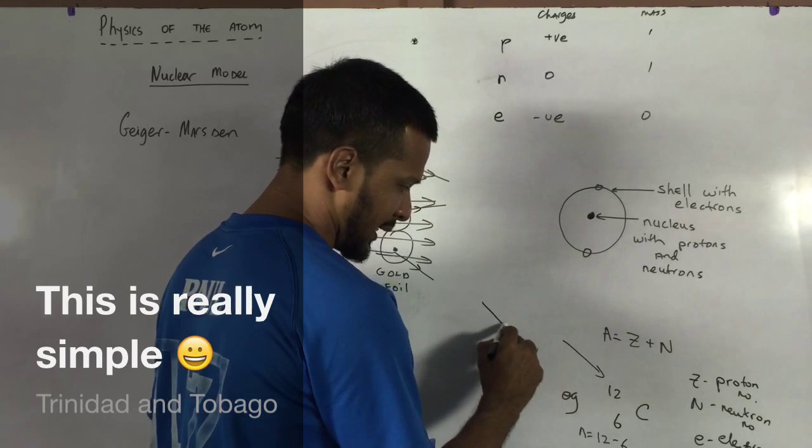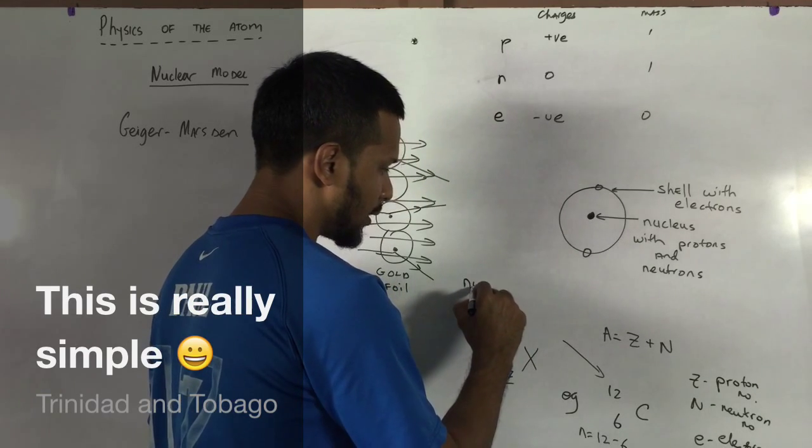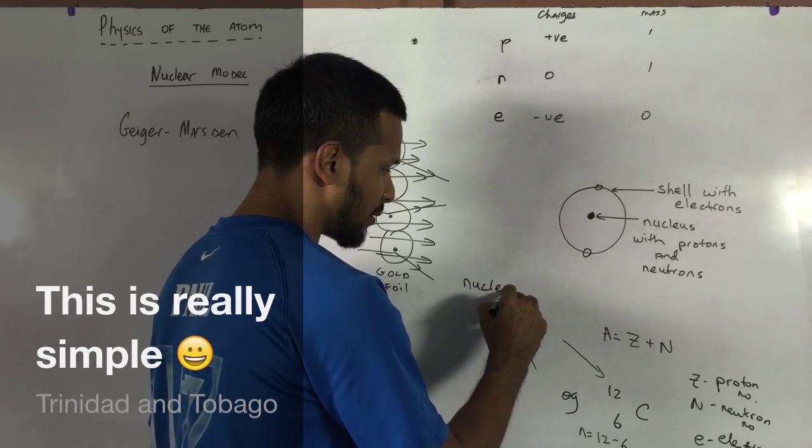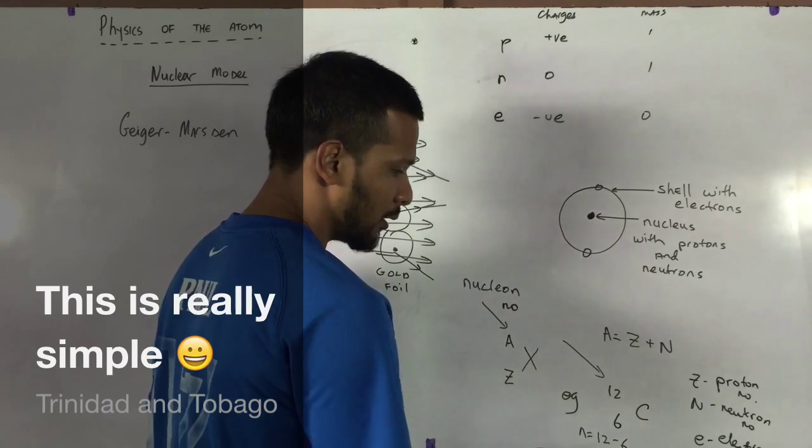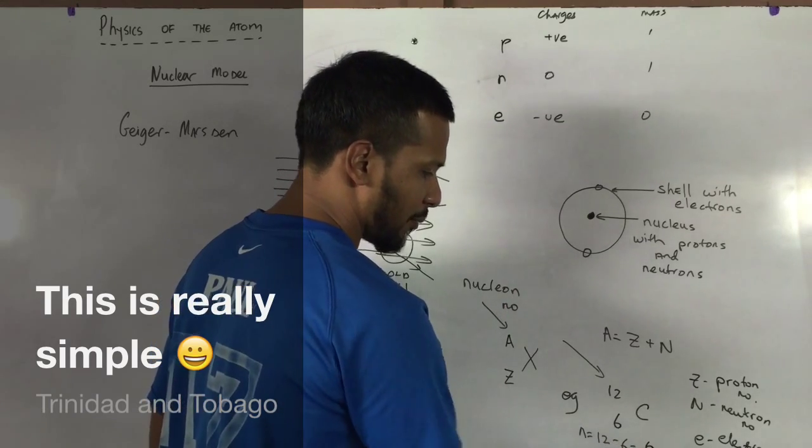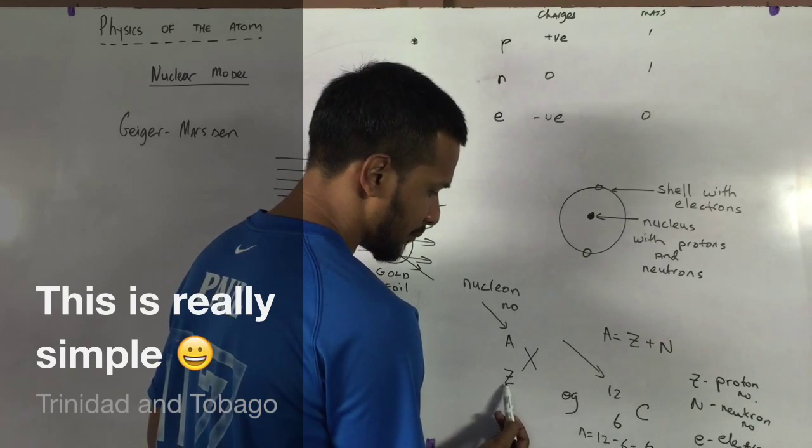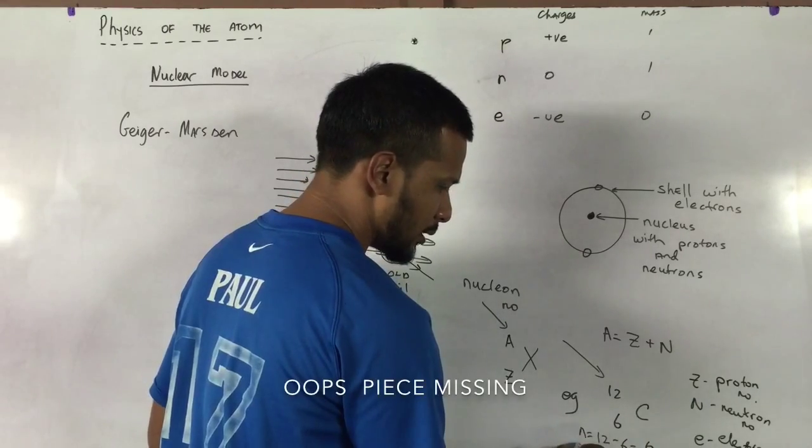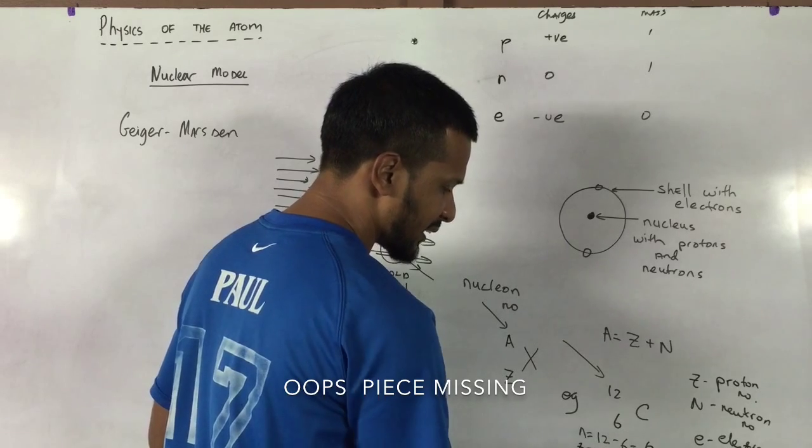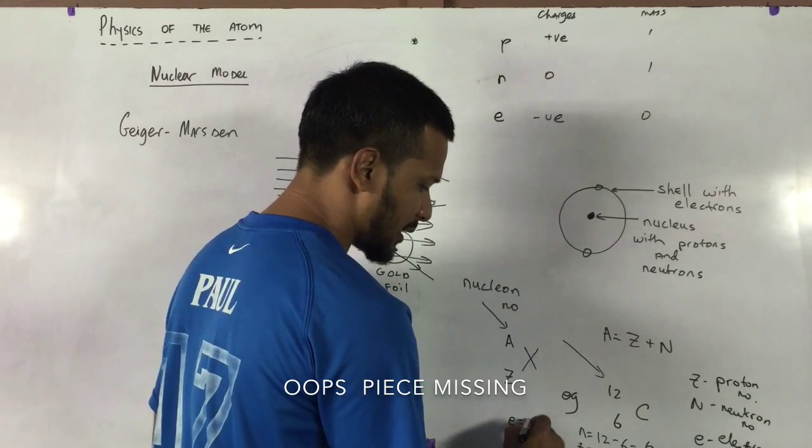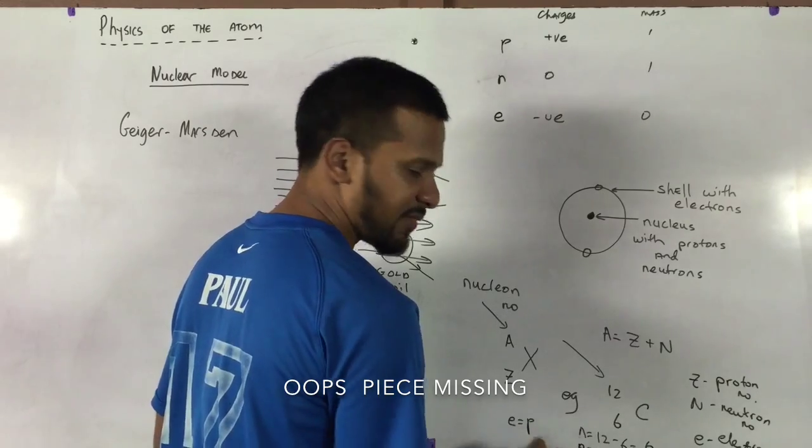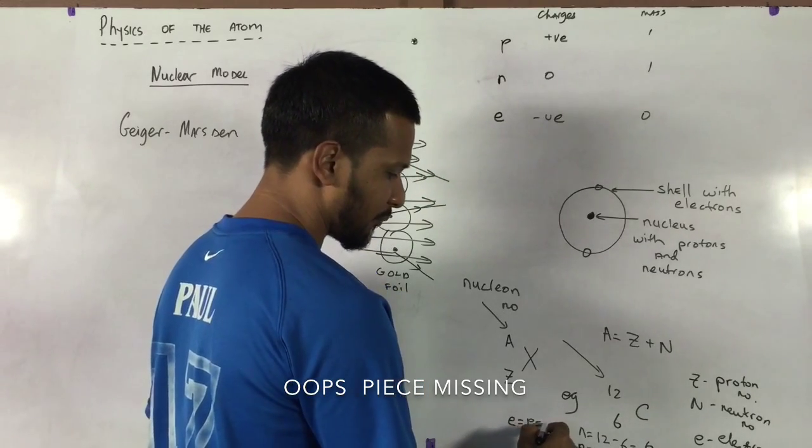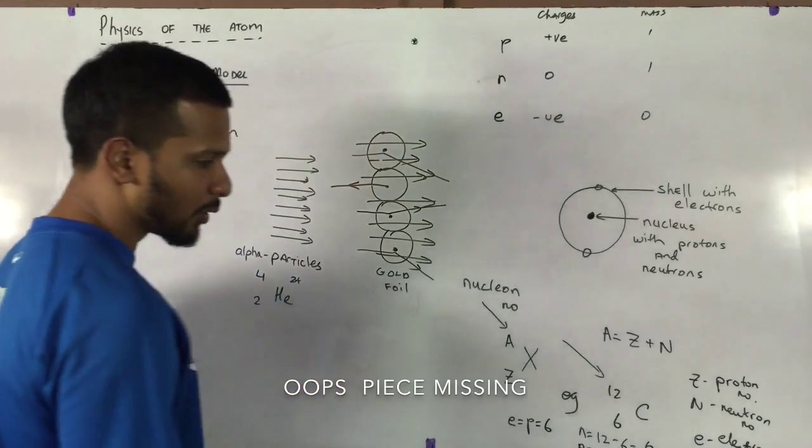And N is simply 12 minus 6. 12, or A as it's called, is the nucleon number. So it's 12 minus 6 gives us the number of neutrons. Z is the atomic number, which is 6 and the proton number. So the number of protons is 6. And the number of electrons is equal to the number of protons if the atom is neutral. So it's also 6.